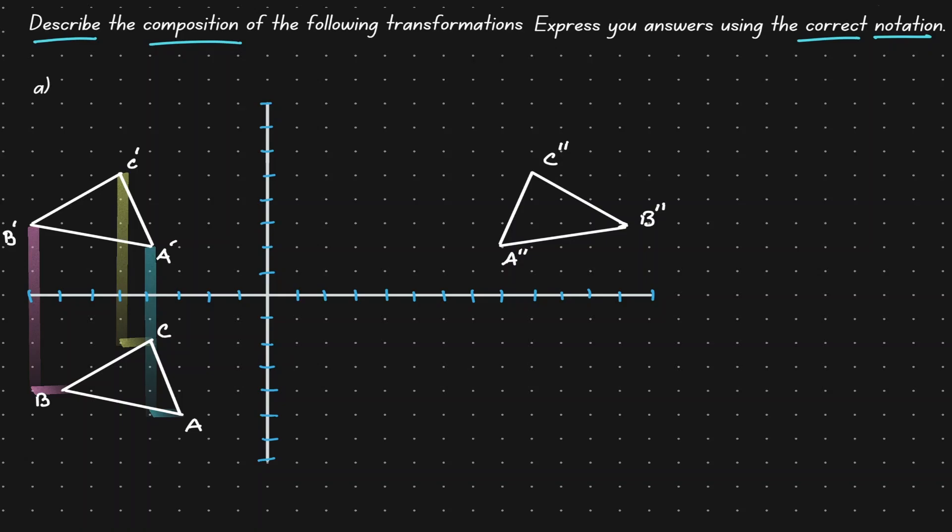This is an indicator that the first transformation was a translation of one unit to the left and seven units up.